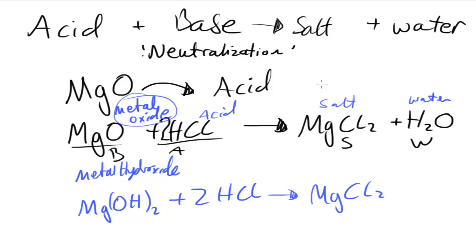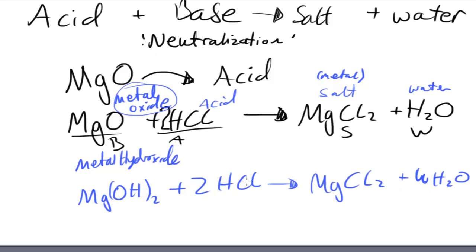The same salt is being produced — it's still a metal salt in both cases — plus water. Magnesium is able to act as a base because it can replace the two hydrogens bonded to the chlorine. Note that MgO is a solid, whereas Mg(OH)₂ would usually be aqueous.